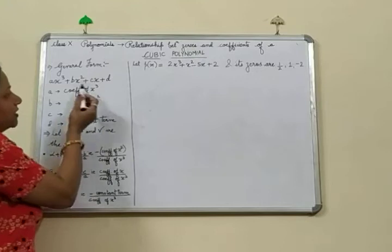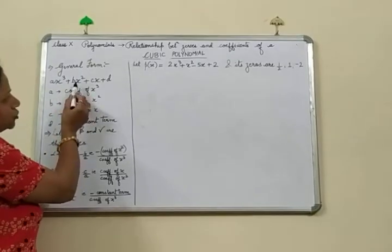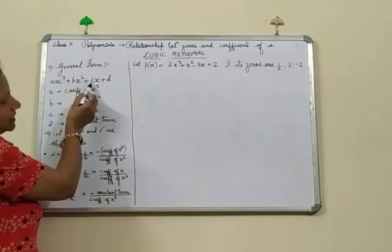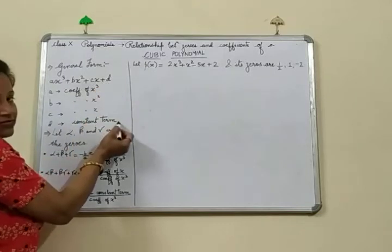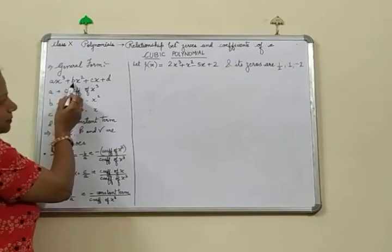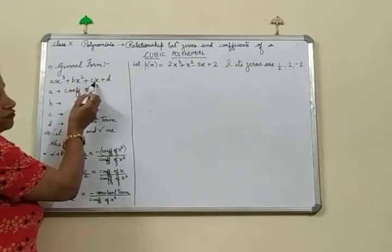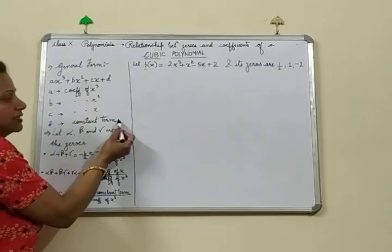Now, where a is the coefficient of x cube, b is the coefficient of x square, c is the coefficient of x, and d is the constant term.